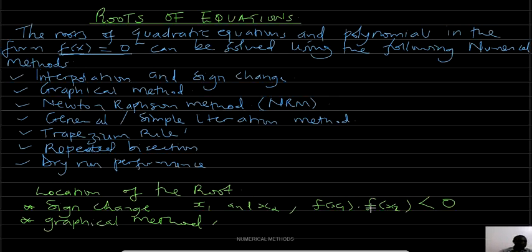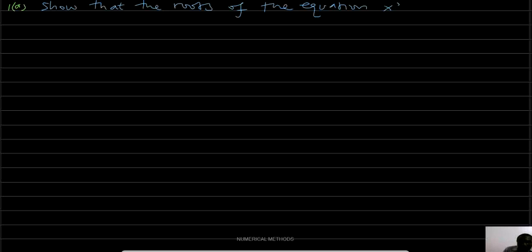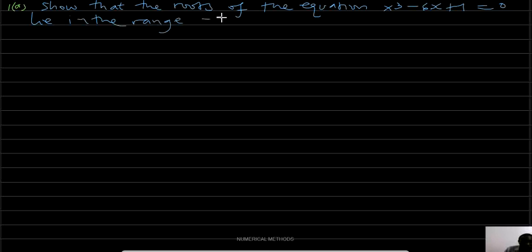Let's have an example. Example 1, Part A: Show that the roots of the equation x³ - 6x + 1 = 0 lie in the range -3 ≤ x ≤ 3.